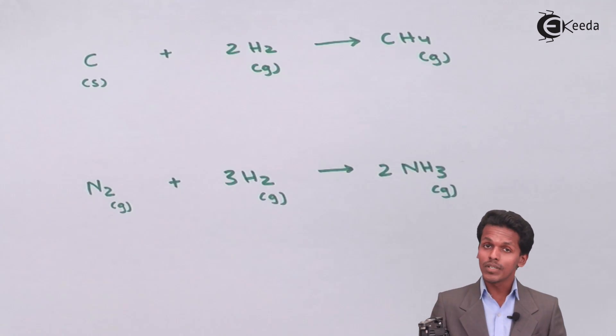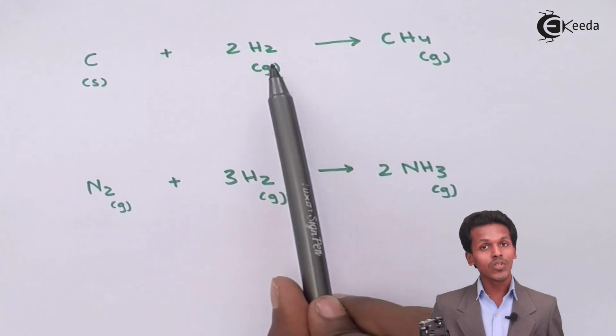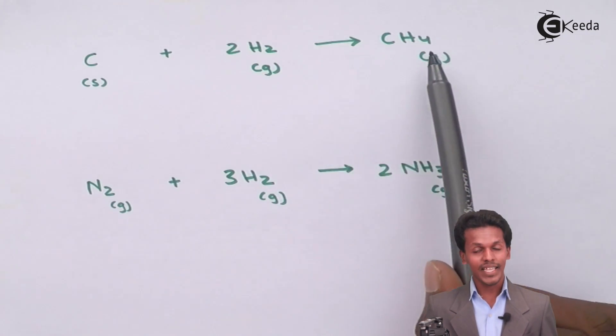These are the two examples I have mentioned in front of you. As you can see, when carbon is reacted with hydrogen, that is two moles of hydrogen, you could produce methane, that is CH₄.